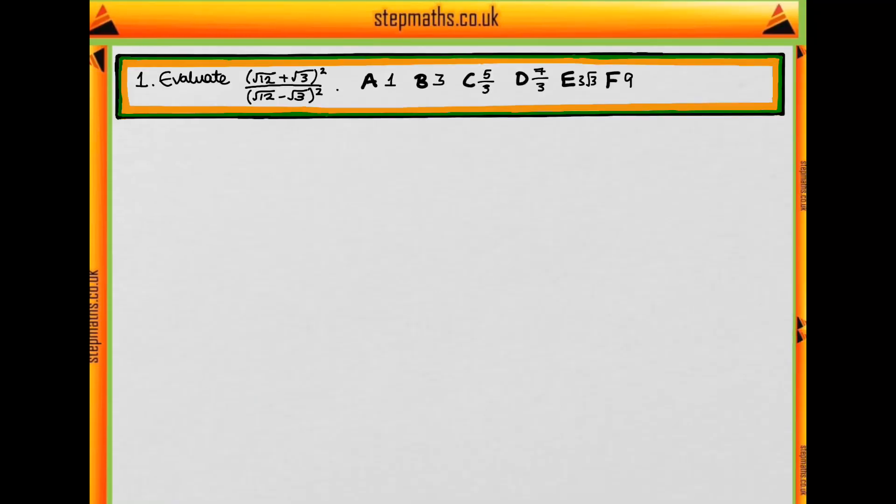This is question 1 of section 1 of the Natural Sciences Admissions Assessment Past Paper 2017. In this question, we're simply asked to evaluate this fraction here.